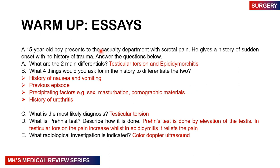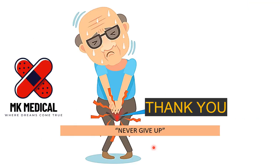Coming back to our warm-up question: a 15-year-old boy presents to the casualty department with scrotal pain and a history of sudden onset with no history of trauma. The two main differentials are testicular torsion and epididymo-orchitis. Four things to ask in history to differentiate the two: history of nausea and vomiting, previous episodes, precipitating factors such as sexual activity or masturbation, and history of urethritis. The most likely diagnosis is testicular torsion. The Prehn's test is done by elevation of the testis — if testicular torsion, it tends to increase the pain; with epididymitis, it will relieve the pain. The radiological investigation indicated is Doppler ultrasound.